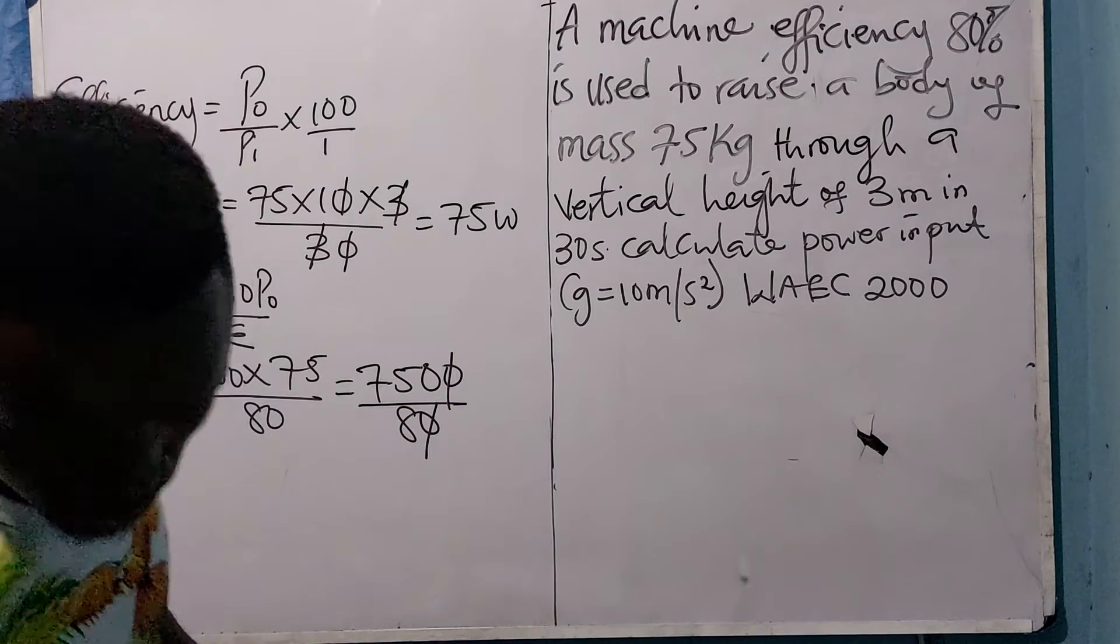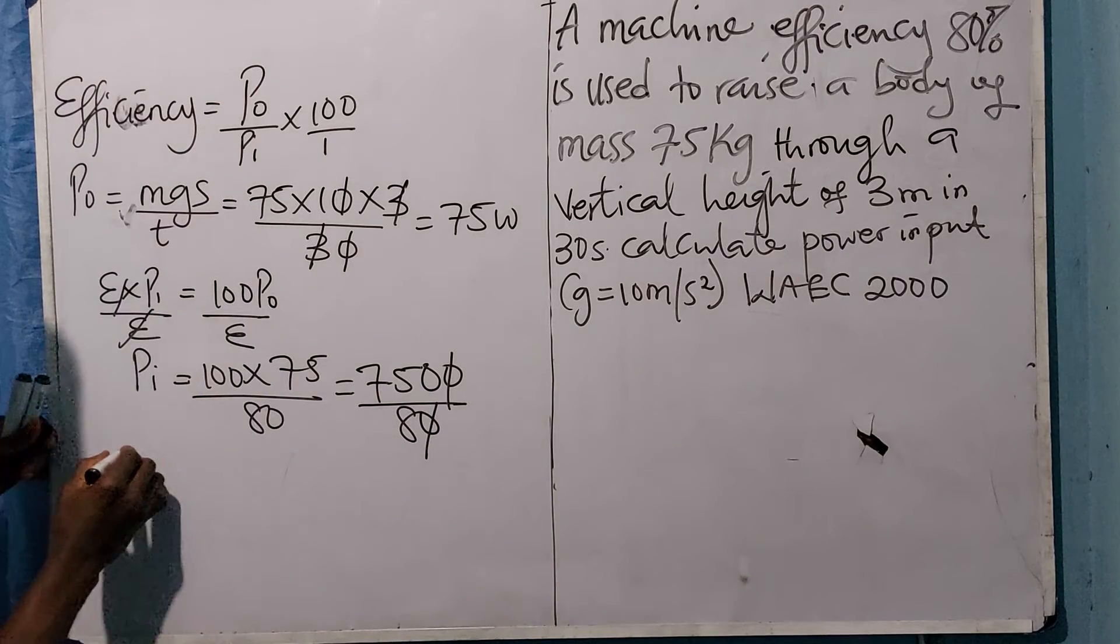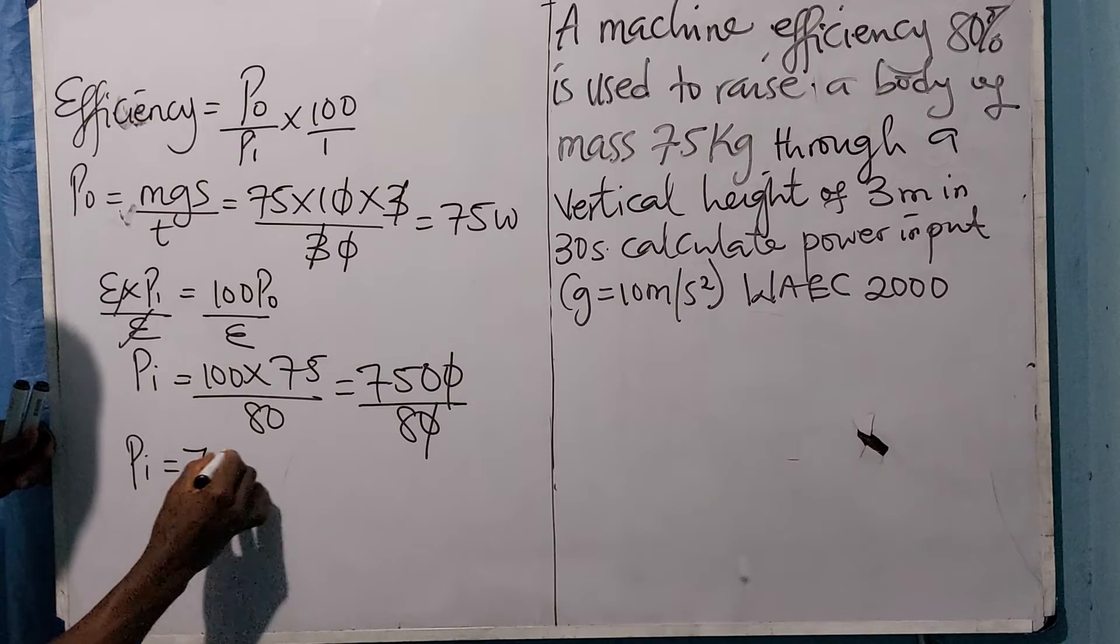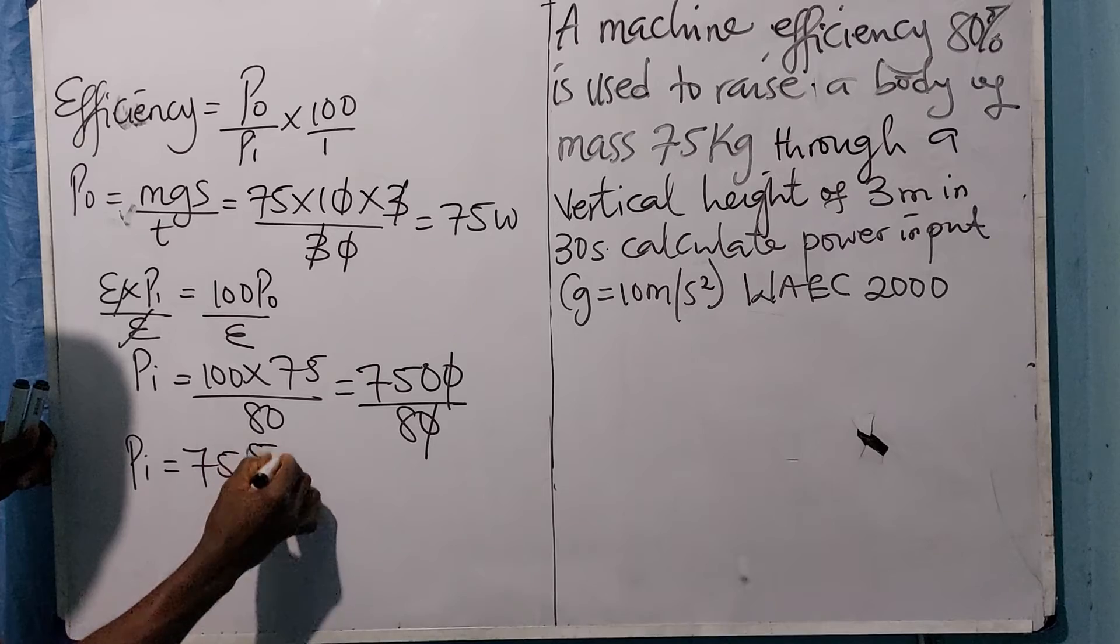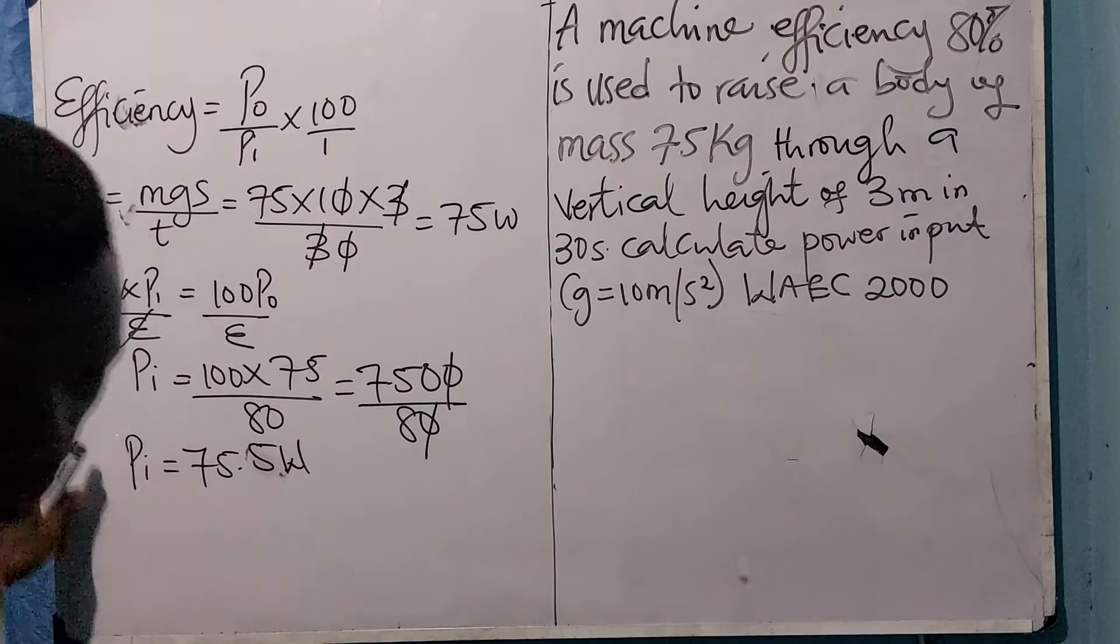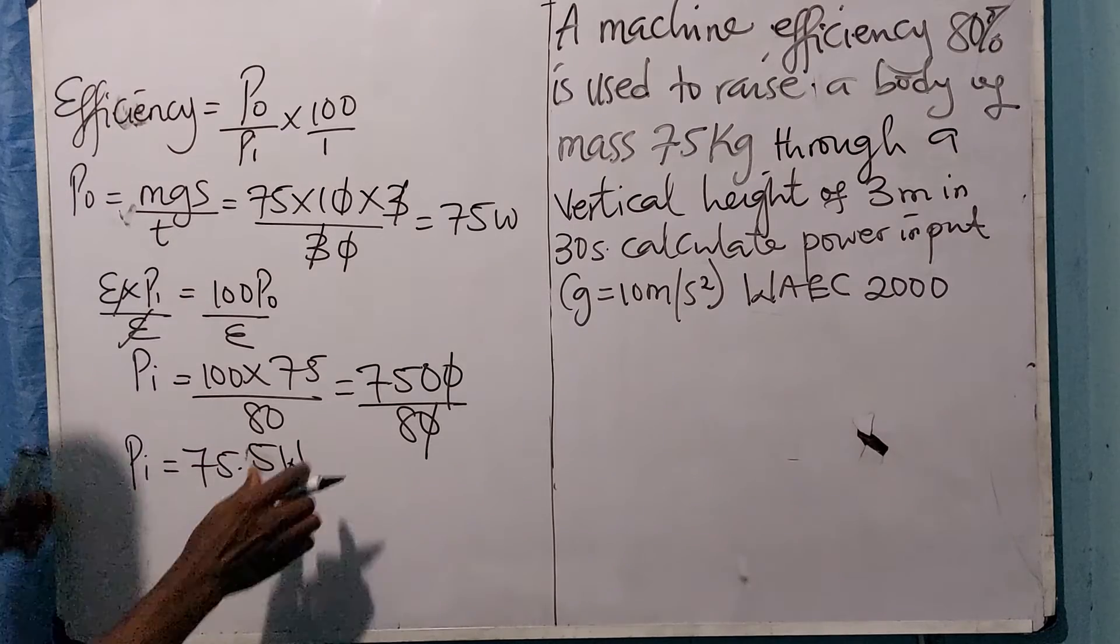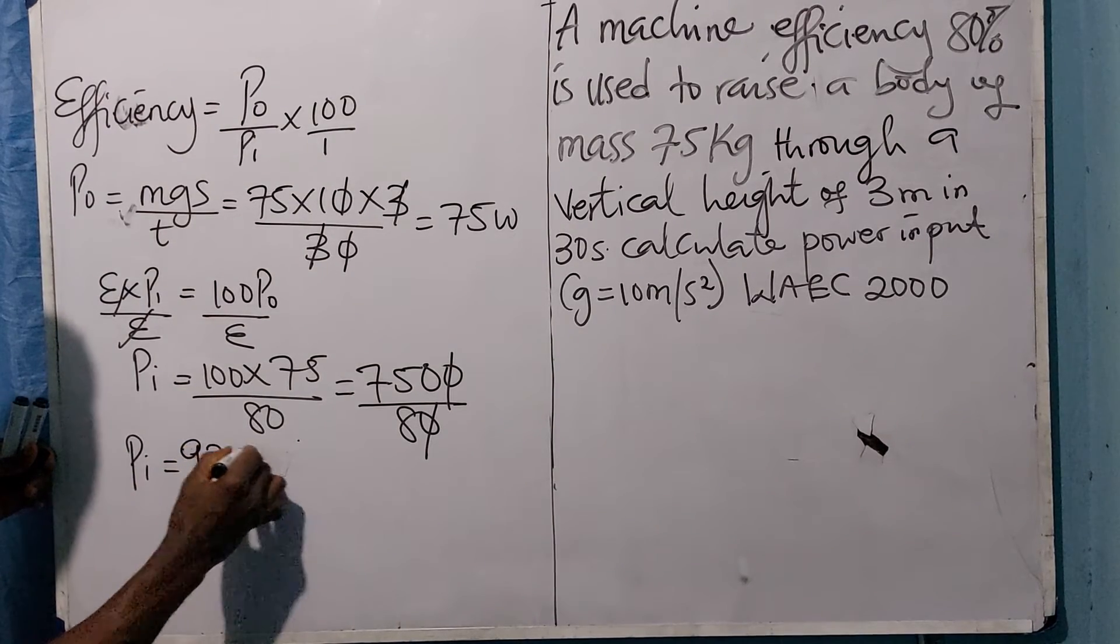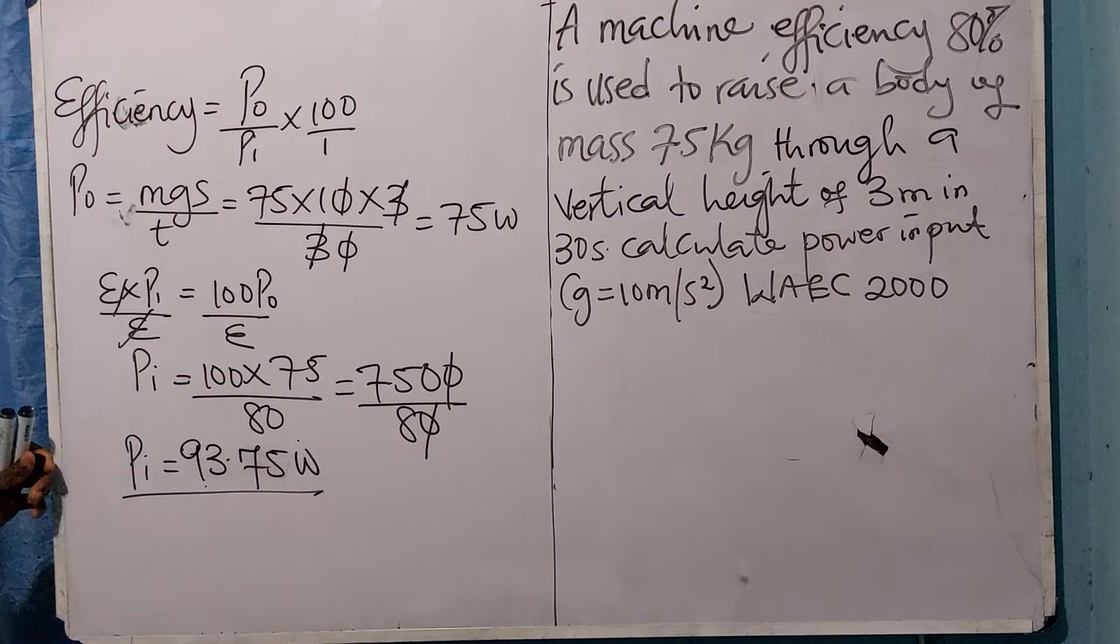Power input is equals 93.75 watts. You know that the SI unit of power is watts.